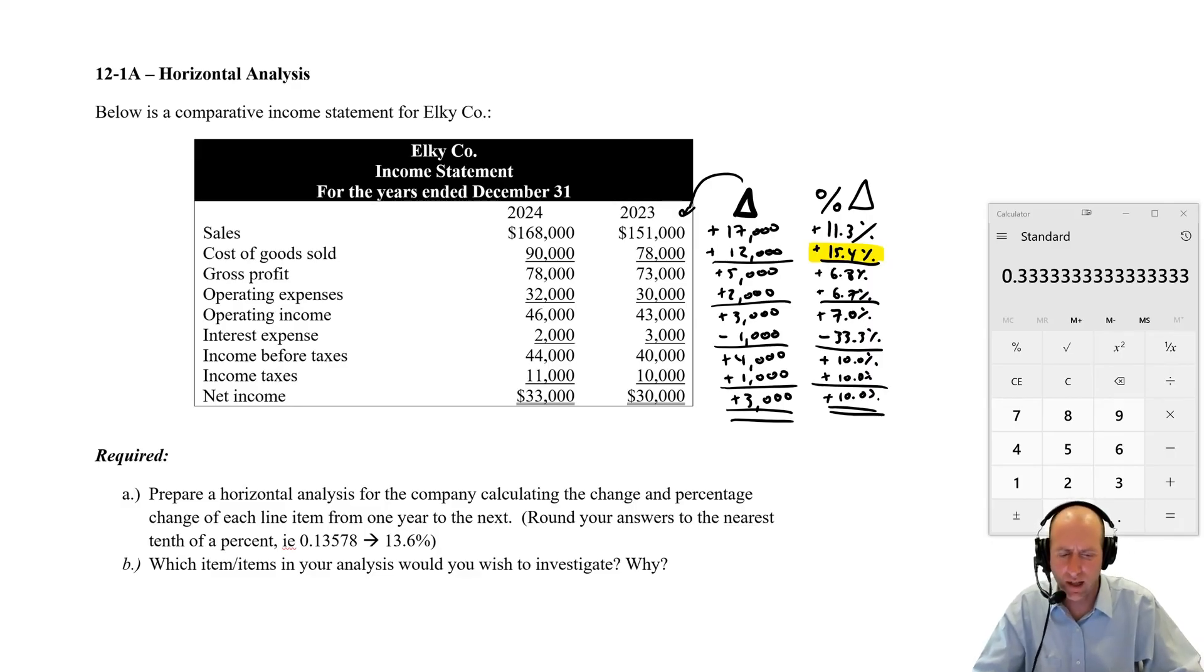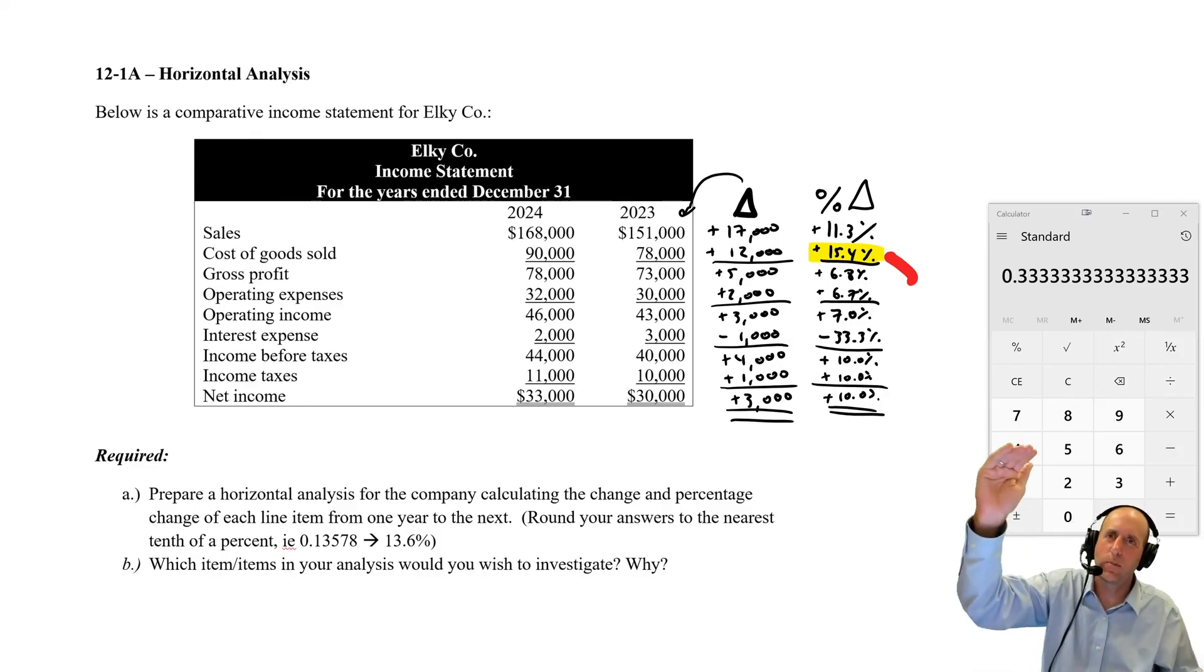You might think, oh, I should investigate the interest expense. This wouldn't take much investigation. I think you would look at the debt and you can see the terms of the debt were likely better, or you just had less debt being serviced. But the alarming number from an investor's standpoint, or the number that you'd be worried about is that one. COGS being up at a higher rate than our sales. We would expect, you sell 10% more stuff, your cost of goods sold should go up by 10%. Well, we sold 11% more stuff. Our cost of goods sold was up 15%. This is significant and worth investigating.